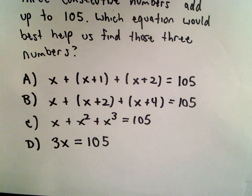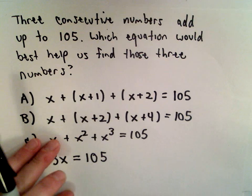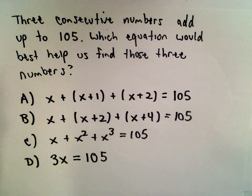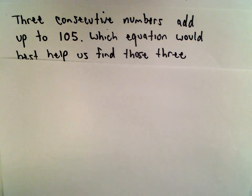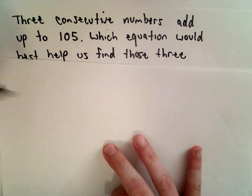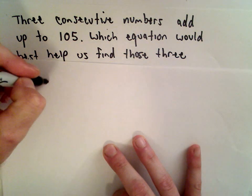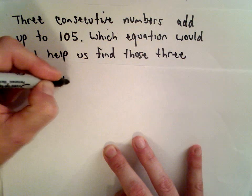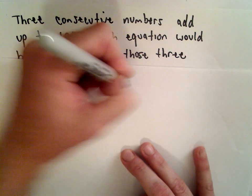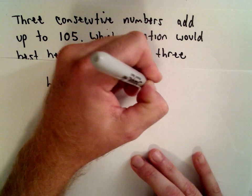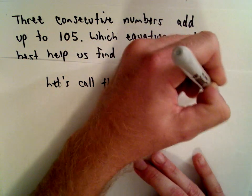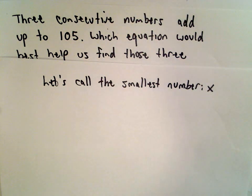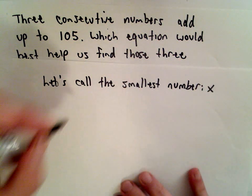If you're not used to these problems, maybe all four choices seem confusing - where is this coming from? But the idea is, we don't know what the numbers are, so let's call the smallest number x. That's the variable we use for everything. So our first number would be x.